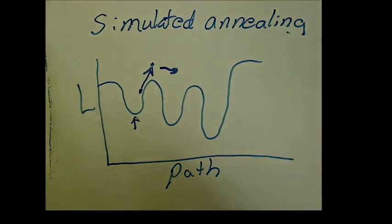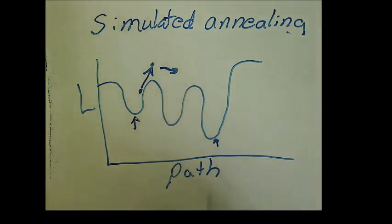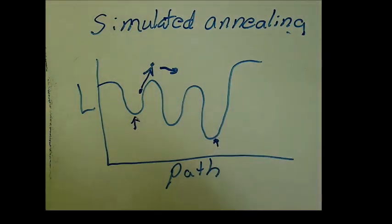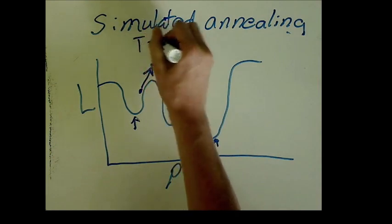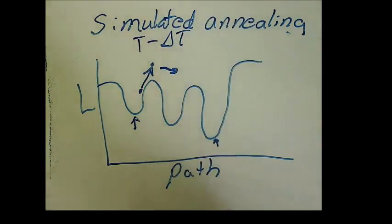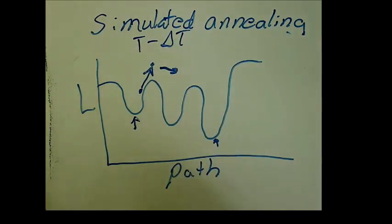And in order to ensure that our solution settles close to the global minimum, here, we decrease the temperature at each time step by some increment delta T. And this ensures that we're less likely to go back to our worst path and continue traveling towards the global minimum.